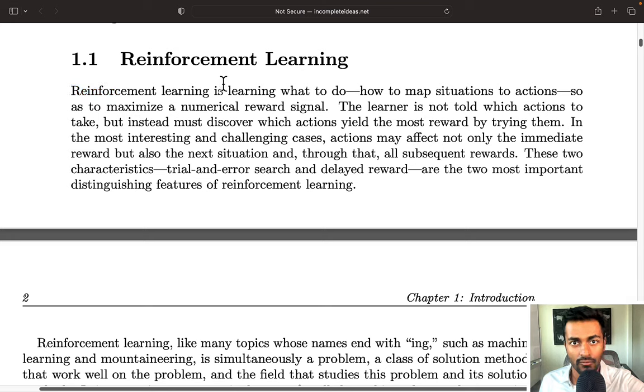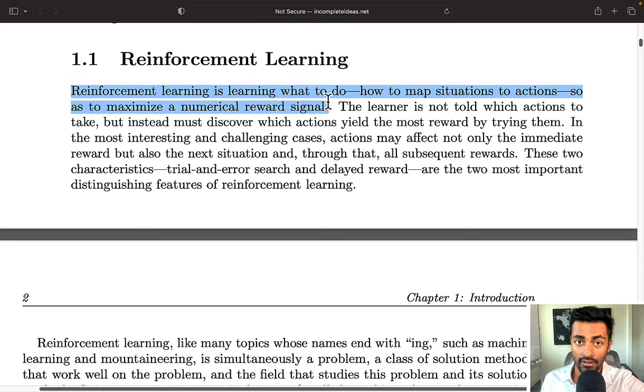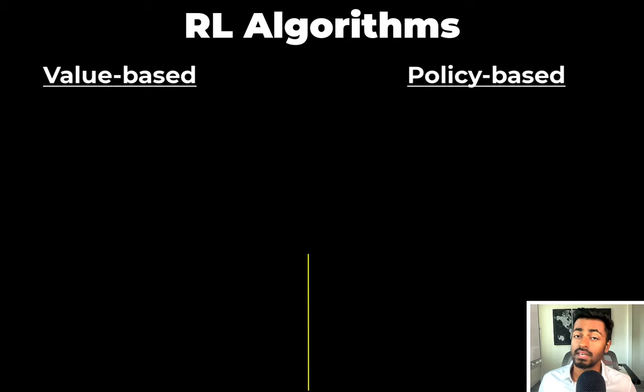Reinforcement learning is learning what to do, that is how to map situations to actions, so as to maximize a numerical reward signal. This can be done in multiple ways, and so we can subcategorize reinforcement learning algorithms into two main parts: value-based methods and policy-based methods.